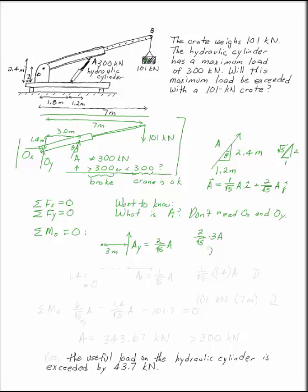The X component of A is at a line of action 1.4 meters away from point O. So this moment at O due to the AX component will be 1 over the square root of 5 times 1.4A. That will tend to spin clockwise.